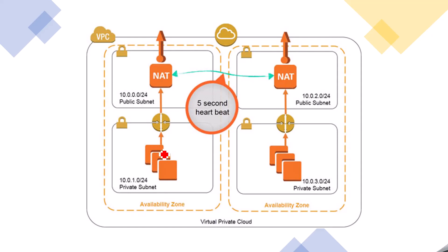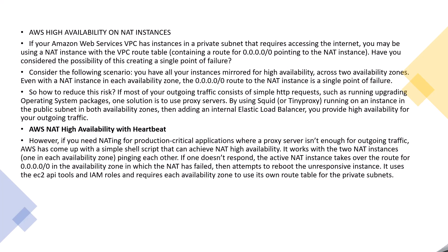Why is having only one NAT gateway a problem? If you are using only one NAT gateway across multiple availability zones, there will be a single point of failure. Here we are having two NAT gateways — one in each availability zone. So if one NAT gateway fails, it will jump to the other NAT gateway and there will not be any single point of failure. This is the correct high availability design. If you are using NAT gateways, you should have multiple — one per availability zone. This covers details about AWS high availability NAT instances: where to use them, how to use them, and how to configure the main route table for NAT gateways.